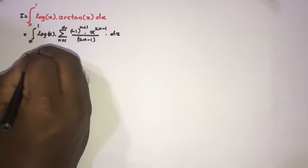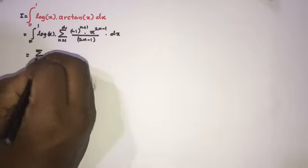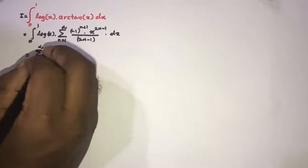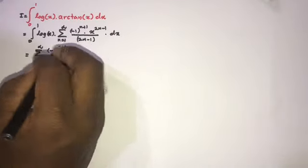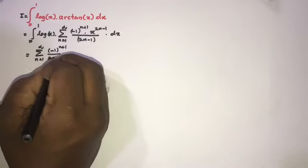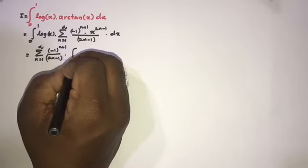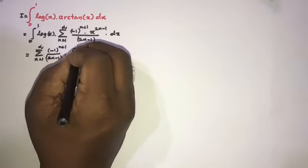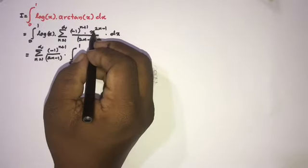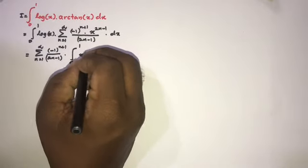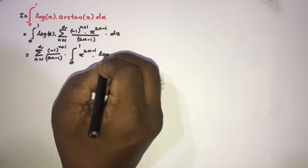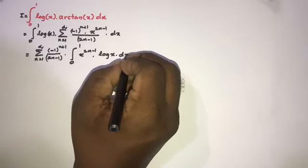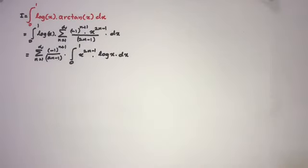This gives us the infinite sum from 1 to infinity of (-1)^(n+1) over (2n-1), times the integral from 0 to 1 of x^(2n-1) times natural log of x dx.